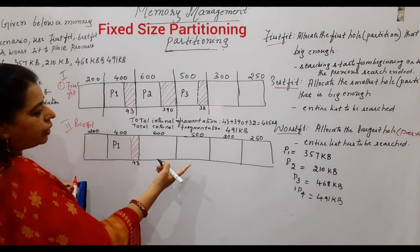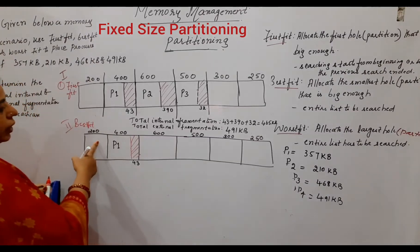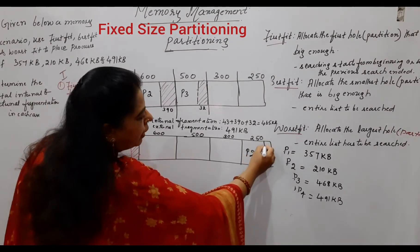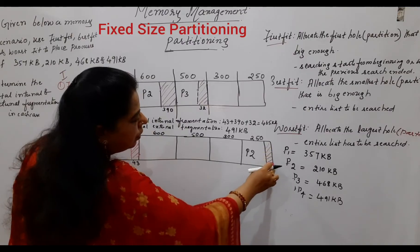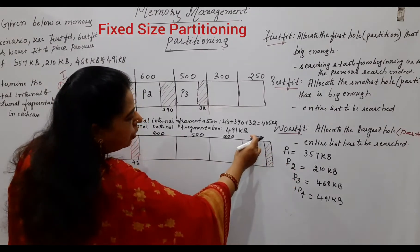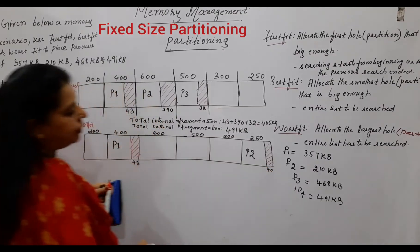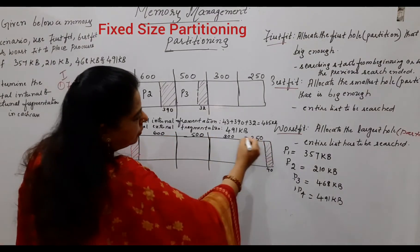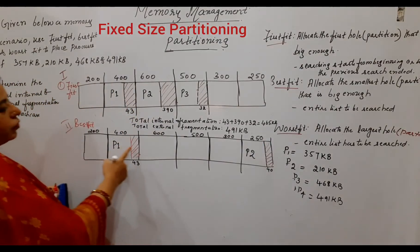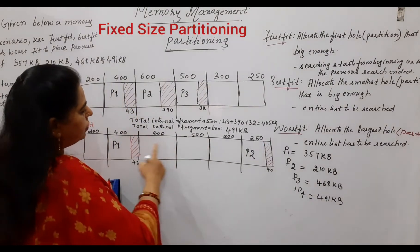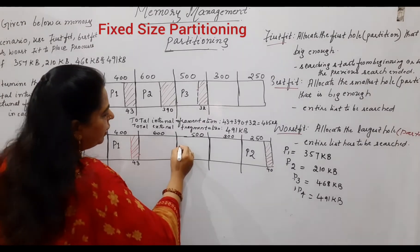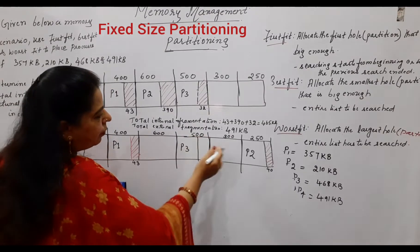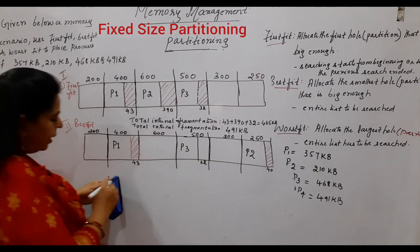For P2 at 210 KB, the best fitting partition is 250 KB, since that gives the least leftover space. The leftover is 250 minus 210 equals 40 KB. For P3 at 468 KB, you cannot accommodate it in the smaller remaining partitions. The best fit is the 500 KB partition, giving a leftover of 500 minus 468 equals 32 KB.